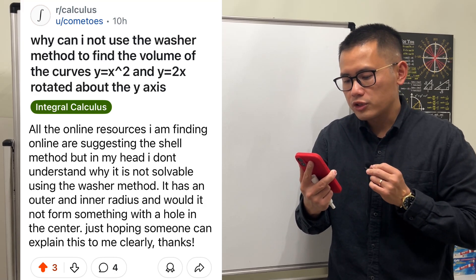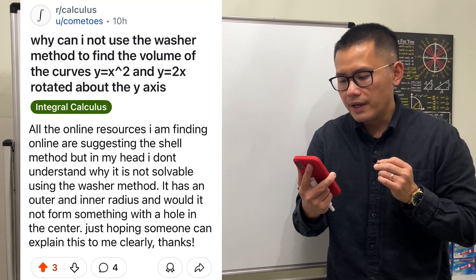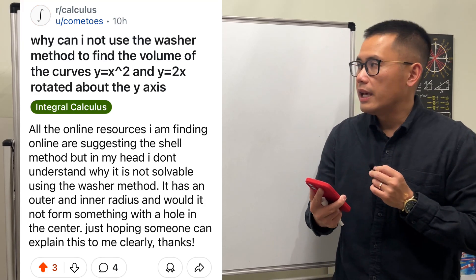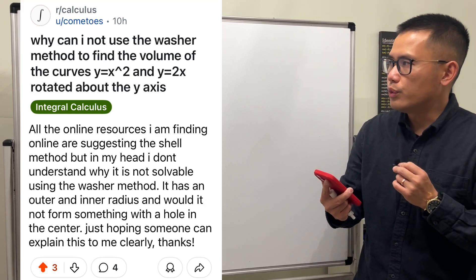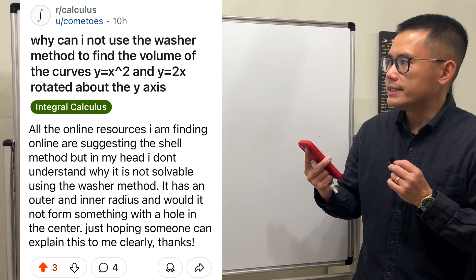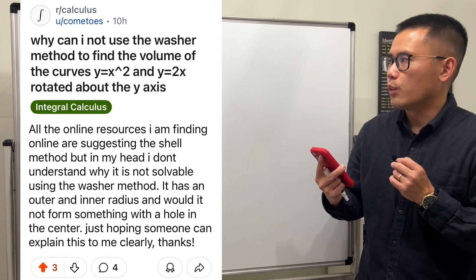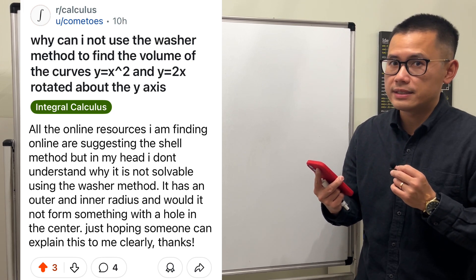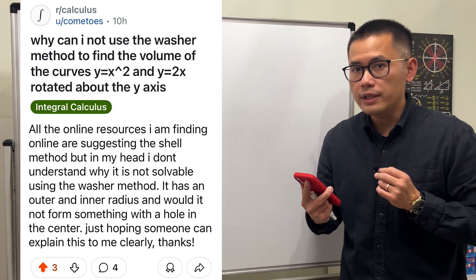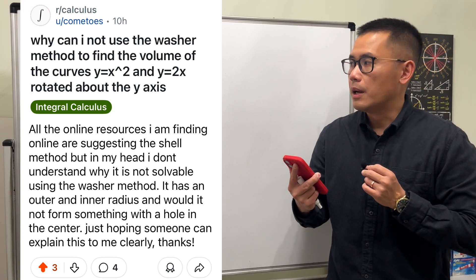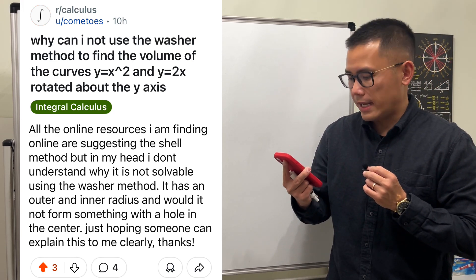Why can I not use the washer method to find the volume? Here we have the two curves y equals x squared and y equals 2x, and we are going to rotate the region about the y-axis.